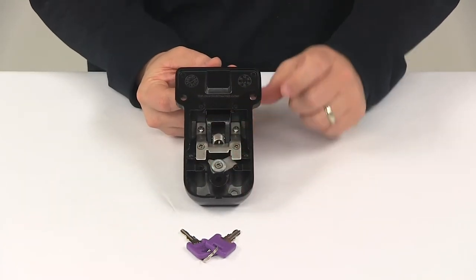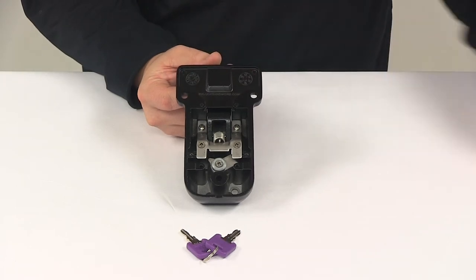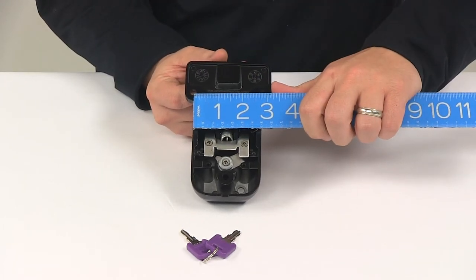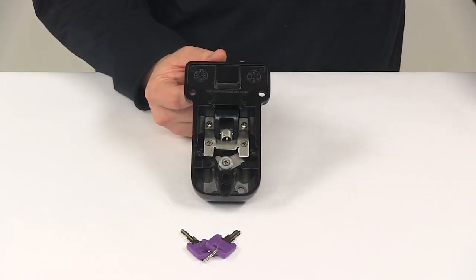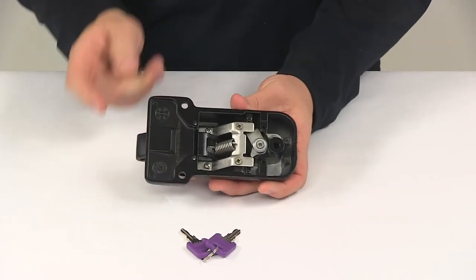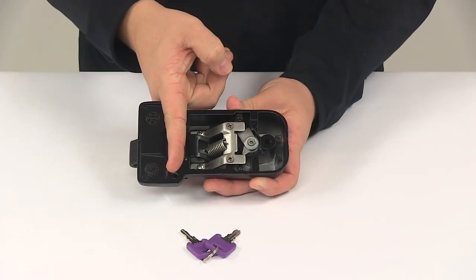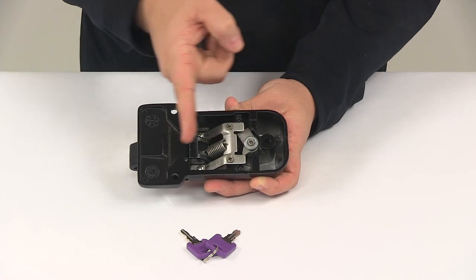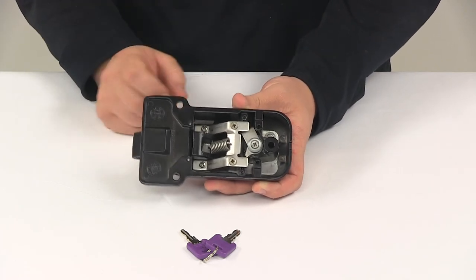The mount holes on this unit, from this one to this one, are separated on center by about two and thirteen-sixteenths of an inch. These holes here are separated from this hole by a straight-line measurement of about three and eleven-sixteenths of an inch.